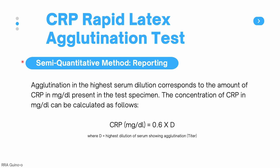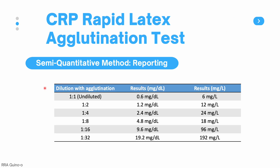For semi-quantitative methods, agglutination in the highest serum dilution corresponds to the CRP concentration in mg per deciliter. The formula is: CRP = 0.6 × dilution factor (D), where D is the highest dilution showing agglutination — your titer. For example, a positive reaction at 1:4 dilution gives 0.6 × 4 = 2.4 mg per deciliter. A positive reaction at 1:2 would be reported as 1.2 mg per deciliter or 12 mg per liter, and a positive at 1:16 would be reported as 9.6 mg per deciliter or 96 mg per liter.